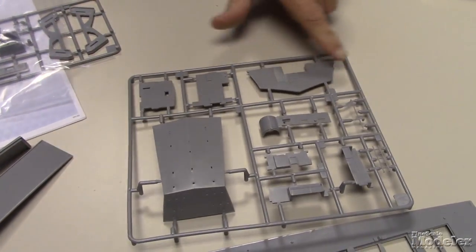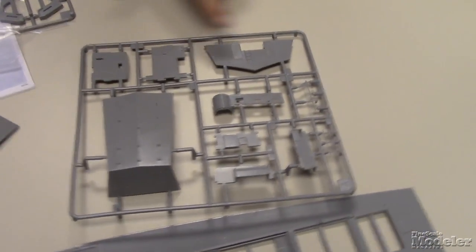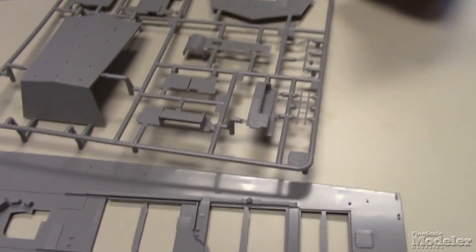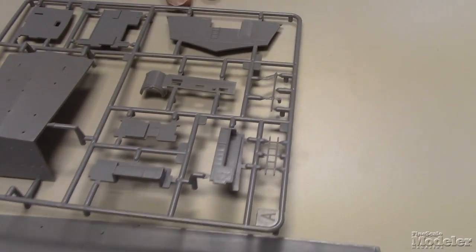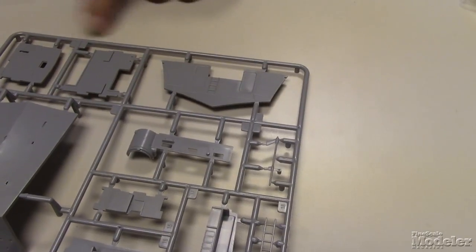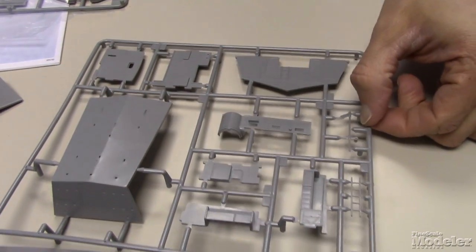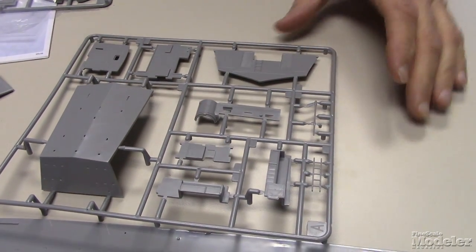The same sprue has a bunch of the parts for the internal and superstructures. There's the external part with one of the anti-aircraft positions, internal bulkheads, some other bits and pieces, internal lockers, couch, that kind of thing.